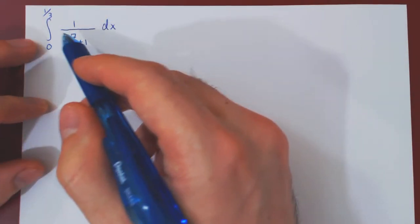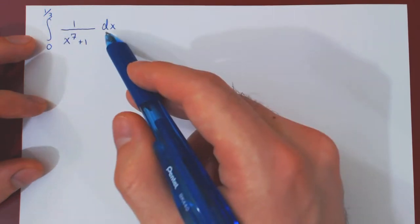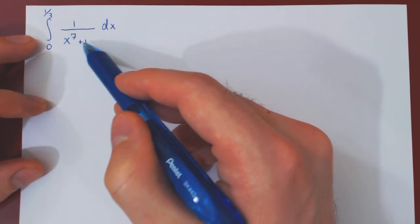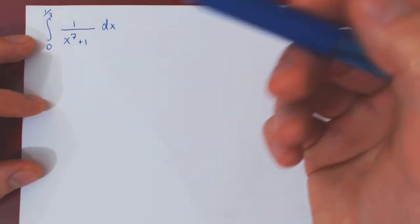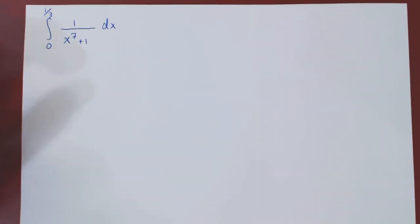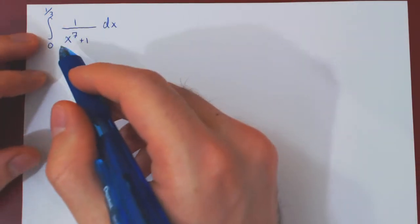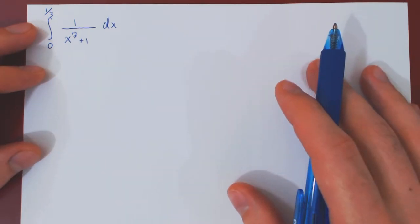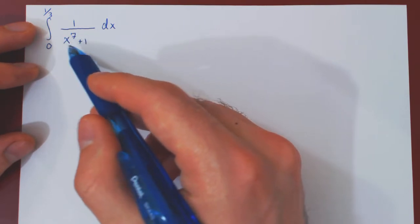It's worth noting that if you look at this integral — integrating 1 over x⁷ + 1 with respect to x from 0 to a third — this looks like a classic problem of integration by partial fractions. You would factor x⁷ + 1 as a product of irreducible linear and quadratic factors over the reals, and then decompose the result into a sum of partial fractions. But factoring x⁷ + 1 over the reals is not an obvious task, and with limited knowledge of complex numbers, this is a rather difficult problem.